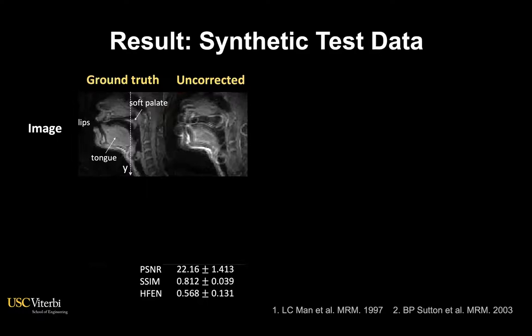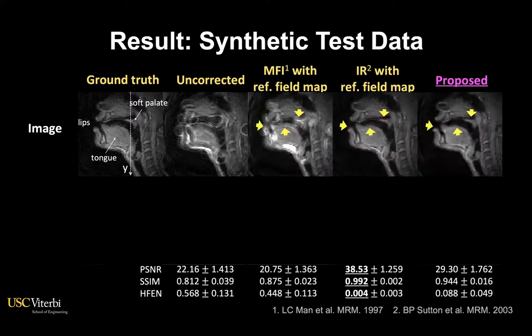Here is an example of the deblurring result on synthetic test data. You can see in the uncorrected images severe blurring in different regions. This is an extreme example chosen to showcase the power of this technique.